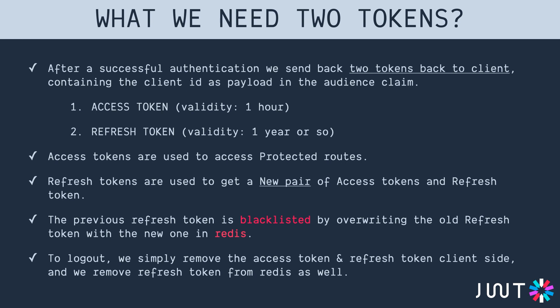The refresh token undergoes two checks: first, whether the token is valid, and second, whether it exists inside Redis. Only if both checks pass will the server issue a new pair. After issuing the new pair, the server overwrites the old refresh token in Redis with the new one, so the old refresh token no longer exists. If any request is made with the old refresh token, the server sees it as valid but not present in Redis, and returns a 403 response.